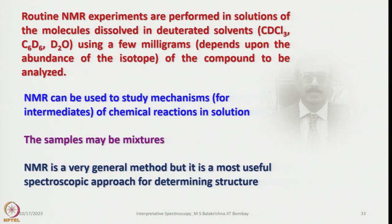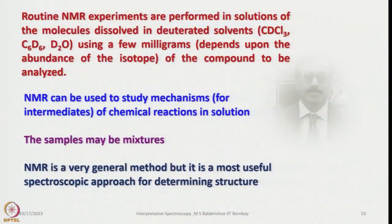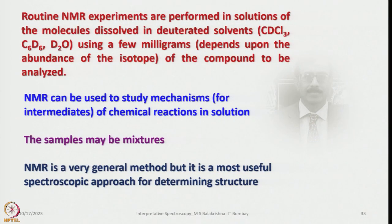For many molecules, the entire structure can be deduced no matter how complicated, provided the sample is pure. Routine NMR experiments are performed in solutions dissolved in deuterated solvents such as CDCl₃, C₆D₆, and D₂O using a few milligrams of sample. How much sample is needed depends on the isotope abundance — ¹H, ³¹P, and ¹⁹F are 100% abundant so small quantities suffice, whereas ¹³C is only 1.1% so substantially more sample is needed. NMR is the most useful spectroscopic approach for determining structures, especially for organic samples.